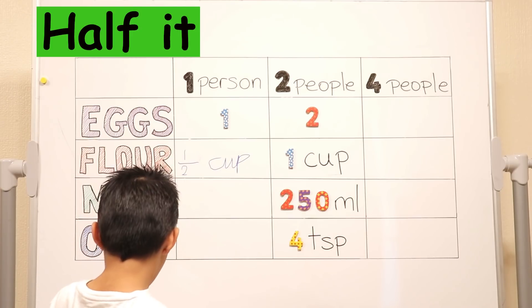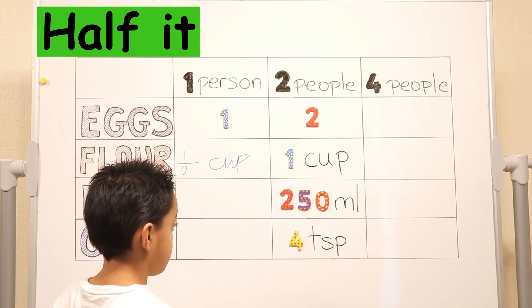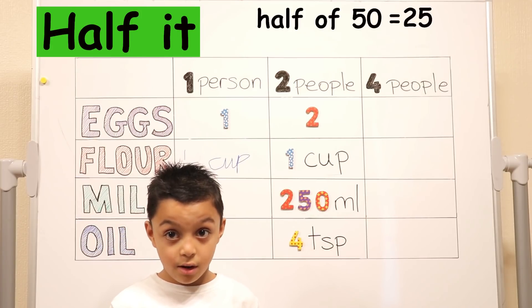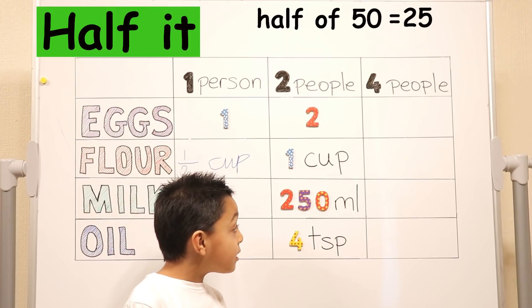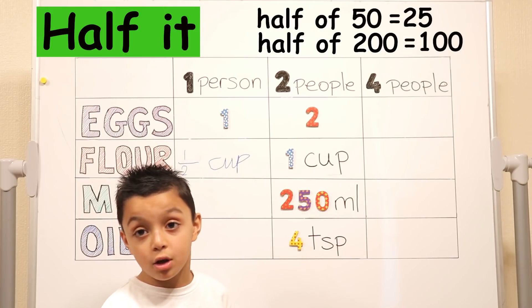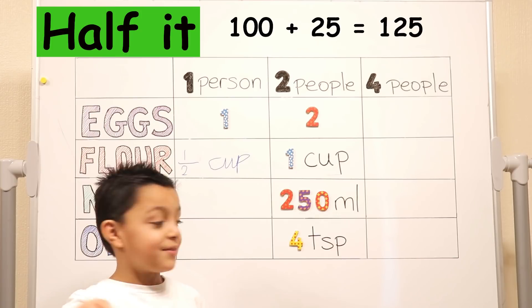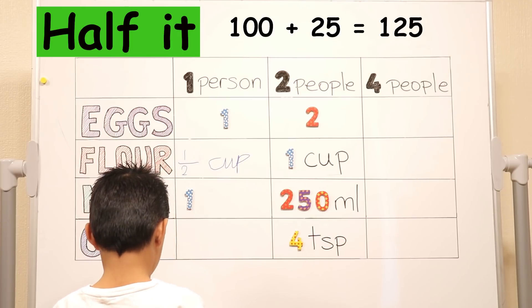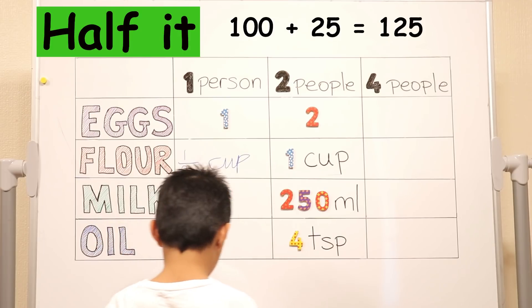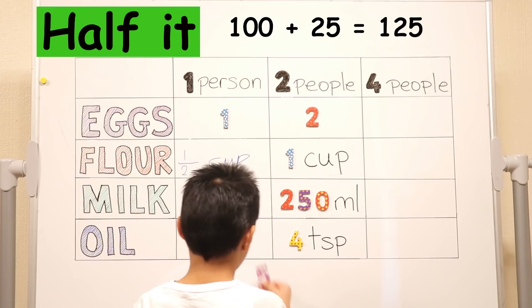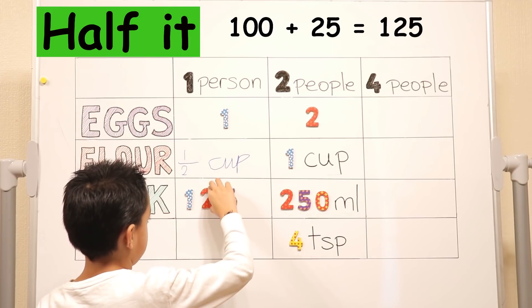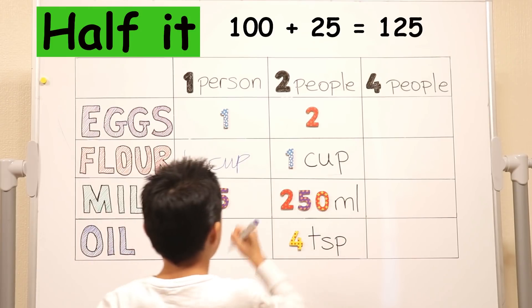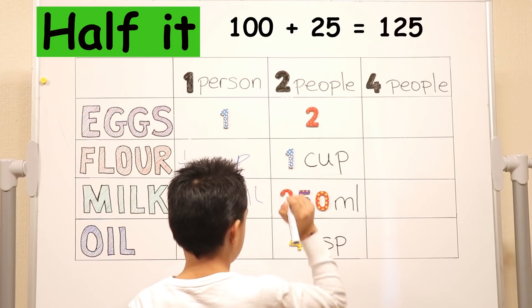How much milk would you need? What are you going to do? Look at us and explain. So we have to half 50, which is 25. Yes. And then half 200, which is 100. So 125. Very good, Niall. 125 milliliters. Okay. So put right your milliliters in quickly.